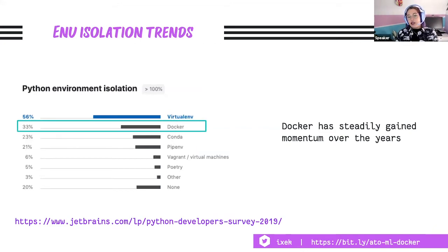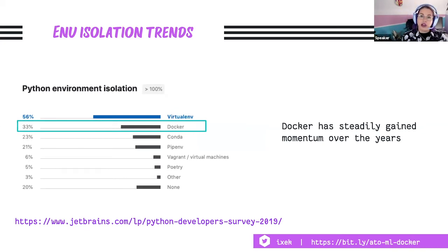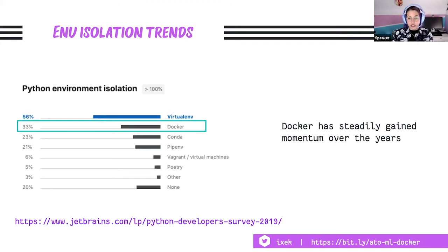Since environment management, library management, and dependency resolution can be difficult in Python, folks tend to use different tools and alternatives to isolate their environments on a per-project basis — whether on their personal computer, the cloud, a production environment, or staging. The most popular is virtualenv, but Docker has been steadily gaining momentum over the years. For at least the last six years, Docker has been an option out there for everyone, and more and more folks are starting to use it.